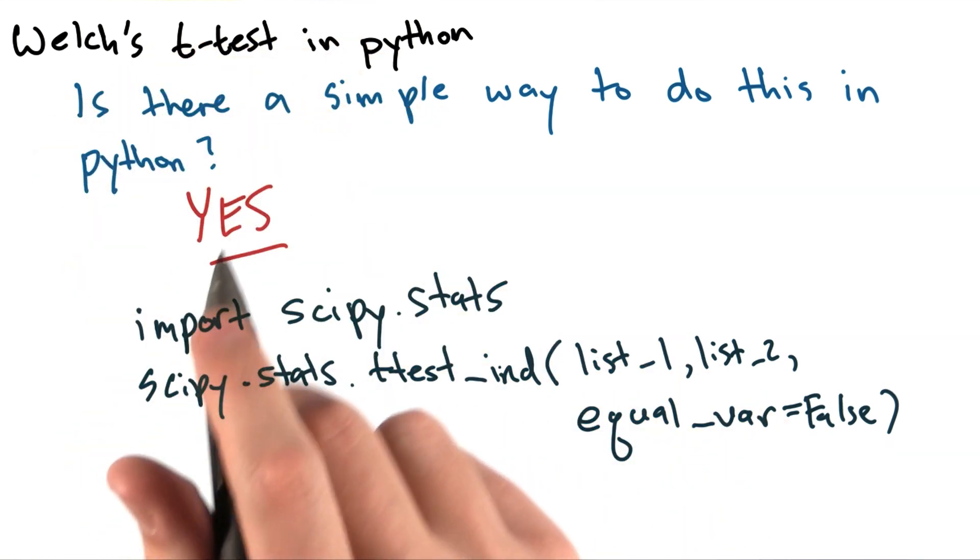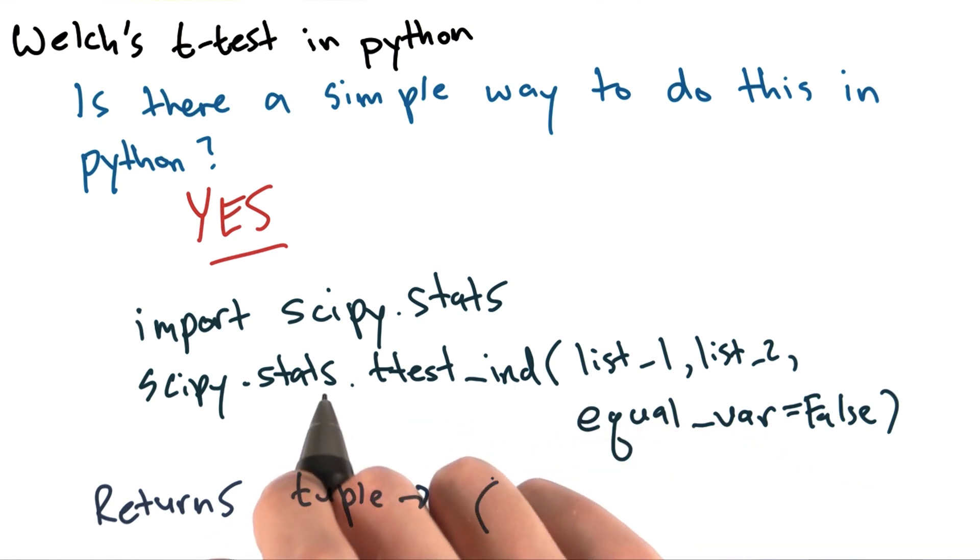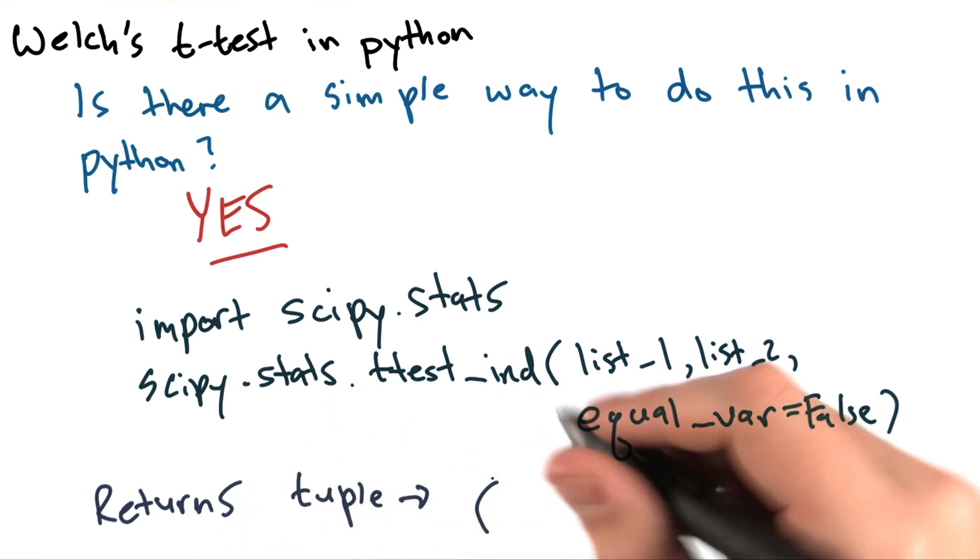This function will return a tuple. The first value is the t-value for your data, and the second value is the corresponding p-value for a two-tailed test.